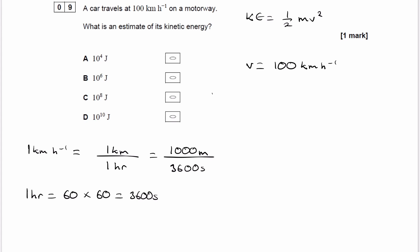So then if we wanted to work out the speed in meters per second, we would then do 100 multiplied by 1,000 meters divided by 3,600 seconds. And this gives us 27.8, roughly.